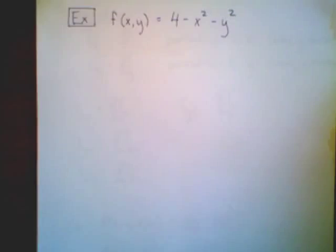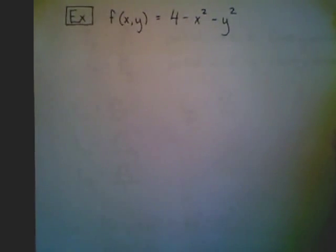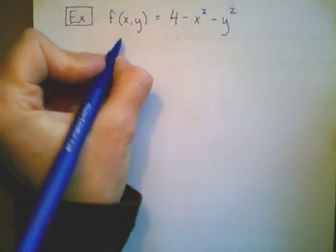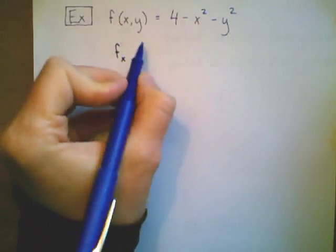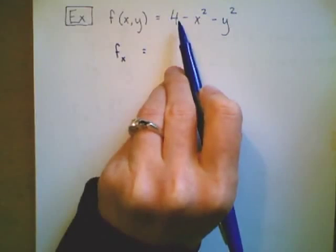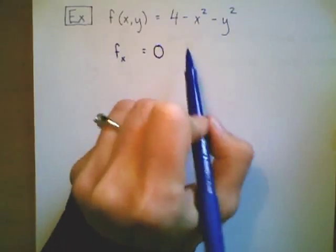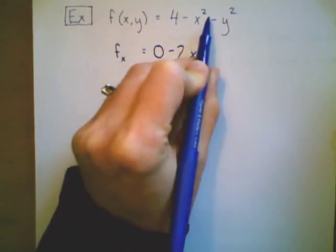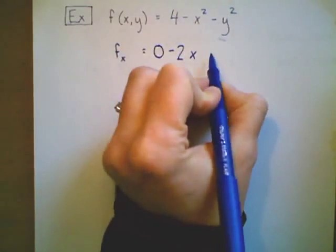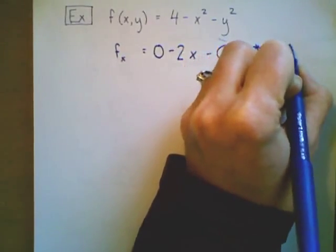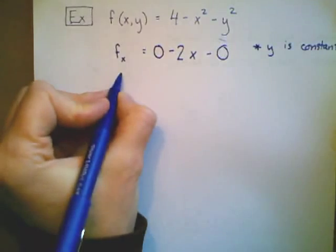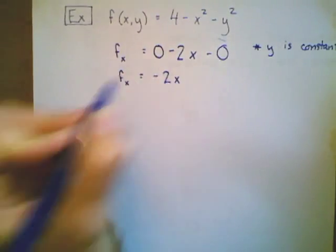We just saw two geometric approaches to computing partial derivatives. Now let's look at some actual computation. For f(x, y) = 4 minus x squared minus y squared, my partial derivative with respect to x — f sub x — is the derivative of this function treating y as constant. The derivative of 4 is zero, the derivative of x squared is negative 2x by the power rule, and the derivative of y squared is zero because y is treated as a constant, just like the derivative of 4. So my partial derivative with respect to x is negative 2x.